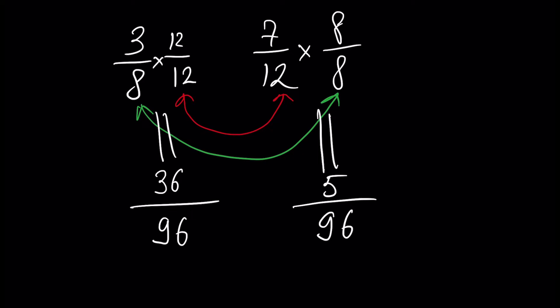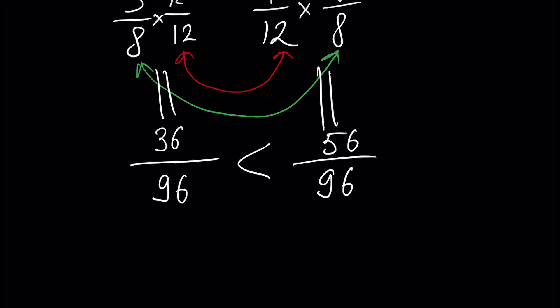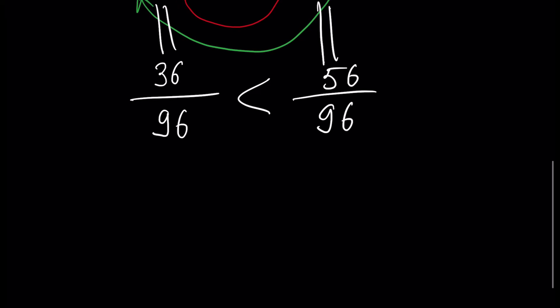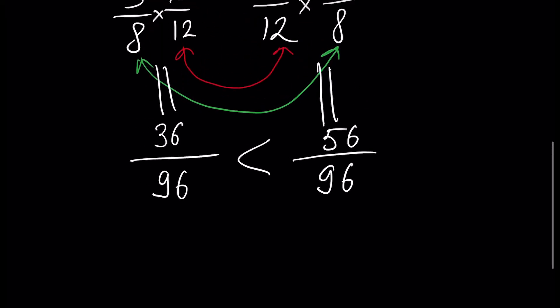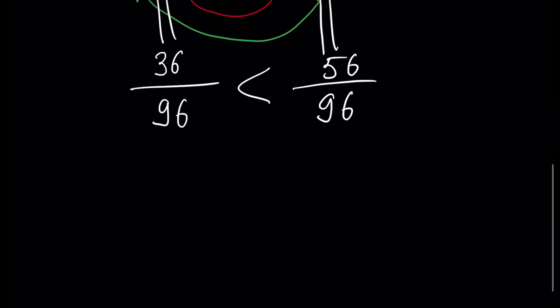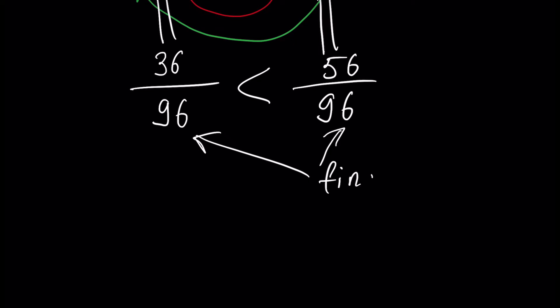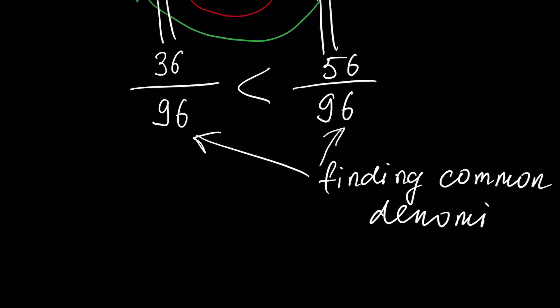Now we can compare these two fractions. The fraction with the bigger numerator is bigger, because as we already know, the bigger number is divided by the same number — 96. This process of finding this common denominator is called finding the common denominator, and 96 is the common denominator.